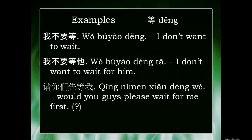The final example is 请你们先等我, which translates as 'Would you guys please wait for me first?' The reason there's a question mark in parenthesis is because the Chinese sentence 请你们先等我 is a statement — a request — whereas in English, 'would you guys please wait for me' grammatically lines up as a question. Thanks for watching.